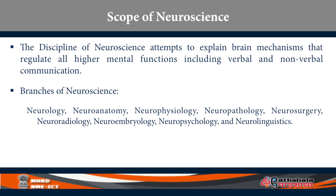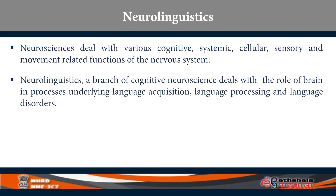Neuro-physiology, Neuropathology, Neurosurgery, Neuro-radiology, Neuro-embryology, Neuropsychology, and Neuro-linguistics. Neurosciences deal with various cognitive, systemic, cellular, sensory and movement-related functions of the nervous system. Neuro-linguistics is only one branch of neuroscience — a branch of cognitive neuroscience which deals with the role of the brain in processes underlying language acquisition, language processing and language disorders.